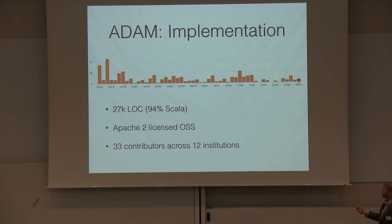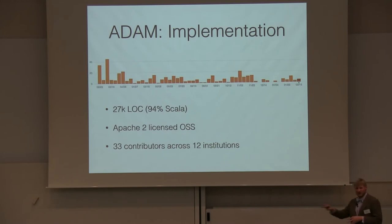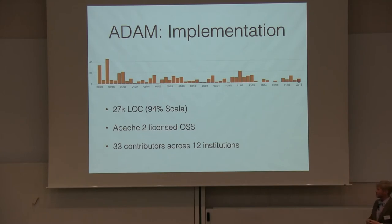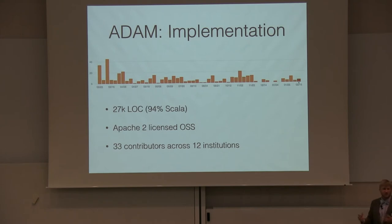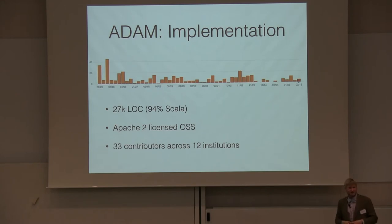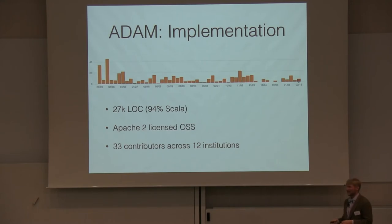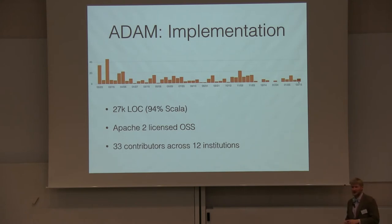From an implementation perspective, ADAM is still under fast development — right now somewhere between alpha and beta, leaning towards beta. We have a couple more improvements planned for a production release later this spring. We're about 27,000 lines of code written mostly in Scala, with 33 contributors across 12 institutions and a development core of about 5 to 10 people. It's fully open, Apache 2-licensed with non-viral licensing — we love contributions, and we have a list of low-hanging fruit on our GitHub issue page.